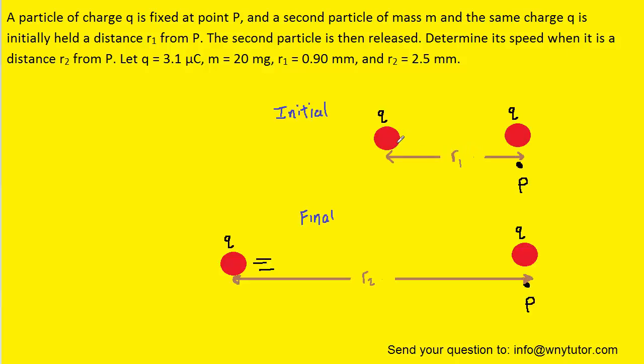So in the initial scenario we have two charges of equal magnitude in charge that are being held a certain distance R1 apart. The one charge is released and so it goes flying off to the left and ends up a distance R2 from the other charge which remains fixed.